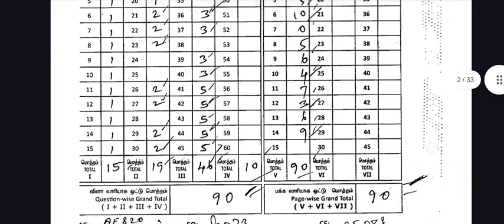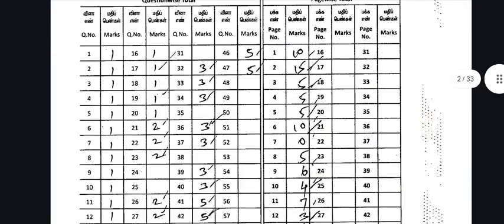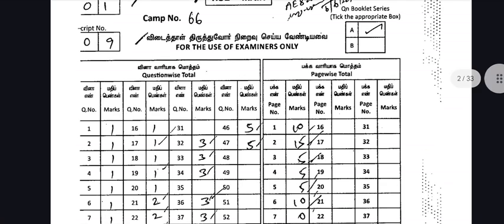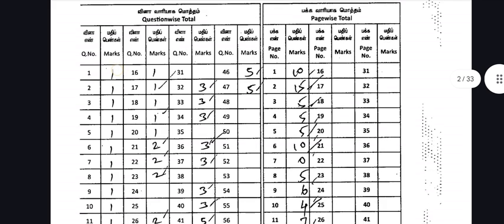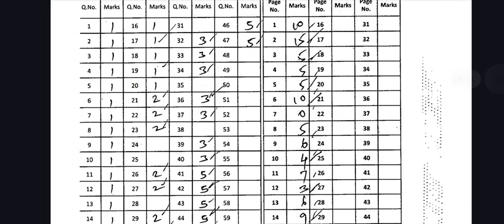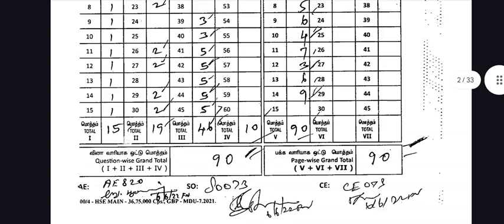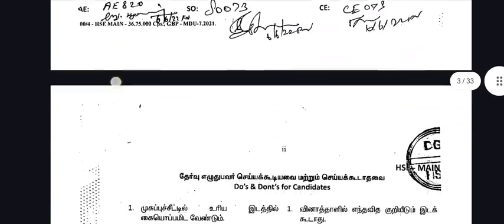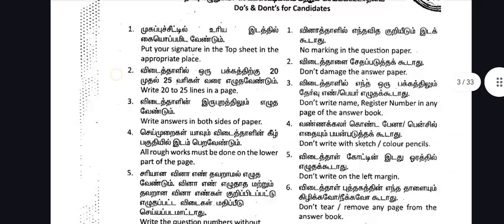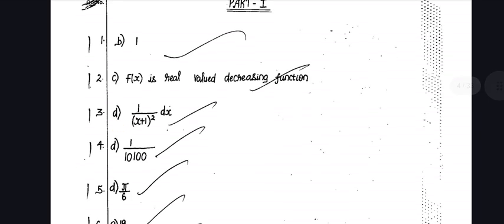Hi everyone. In this video, we are going to do a paper from the previous year of Maths. We are going to score 90 out of 90. We are going to do a review, and we will link to the PDF in the description. We are going to talk about careless mistakes.